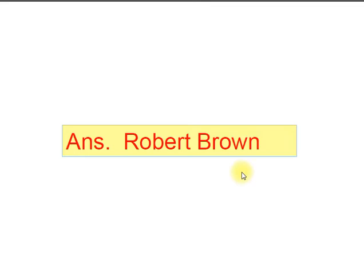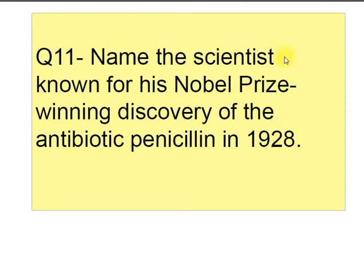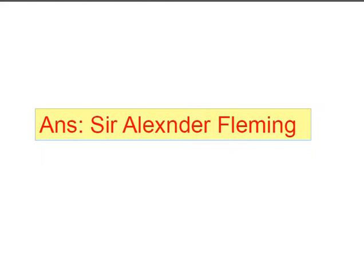Question number eleven: name the scientist known for his Nobel Prize-winning discovery of the antibiotic penicillin in 1928. Answer: Sir Alexander Fleming, also known as father of antibiotics. He found that the Penicillium fungus produces an antibiotic which he named penicillin.